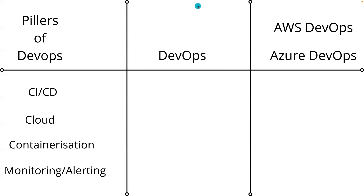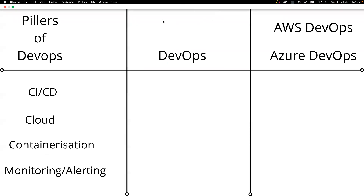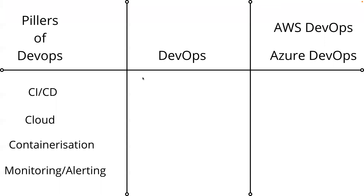Let us now understand what this DevOps thing is and what you should start learning. It's very easy to understand if you have understood the pillars of DevOps. I have already made a video about the pillars of DevOps — if you have not watched it, go to my channel. Basically, the pillars of DevOps cover CI/CD, cloud, containerization, and alerting and monitoring. On a high level, these are the four things we speak about.